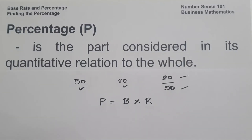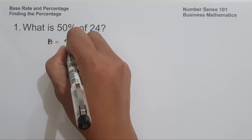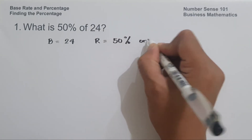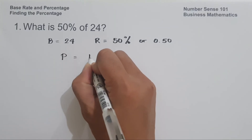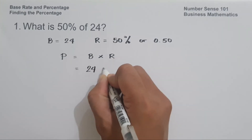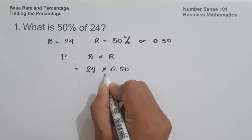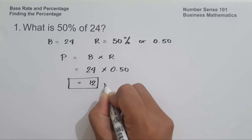Let's start with example number one: What is 50% of 24? To find the number, we identify the base, which is 24, and the rate, which is 50% or 0.50 in decimal. Using the formula P = B × R, we get 24 multiplied by 0.50, which gives us 12. So 12 is 50% of 24.